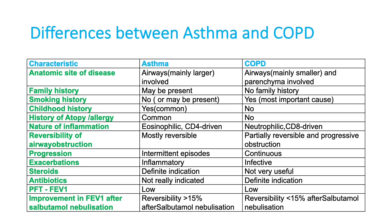Family history is seen in asthma but is not very important in COPD. Smoking history is typically absent in asthma but present in COPD. Childhood history is present in asthma but may not be in COPD. Inflammation in asthma is eosinophilic or CD4-driven, whereas in COPD it is neutrophilic or CD8-driven. Reversibility of airway obstruction is seen in asthma — it is a reversible, intermittent disease — whereas COPD is a progressive, not completely reversible disease.